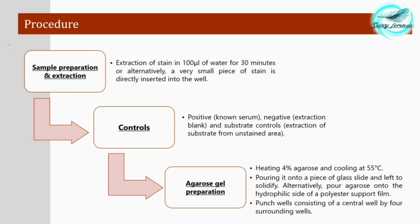For the complete procedure, as with other immunodiffusion tests discussed previously, we first prepare and extract the sample — extraction of the stain in 100 microliters of water for 30 minutes. Alternatively, a very small piece of the stain is directly inserted into the well, but extraction first gives more clear and reliable results. Controls are also taken: a positive known serum, a negative extraction blank, and a substrate control extracted from an unstained area.